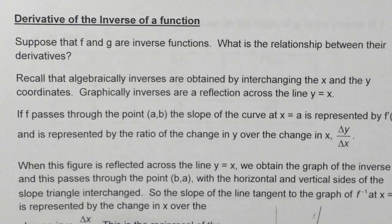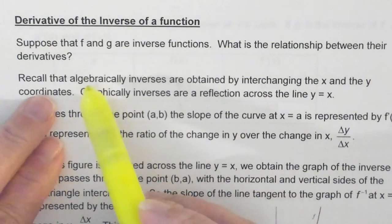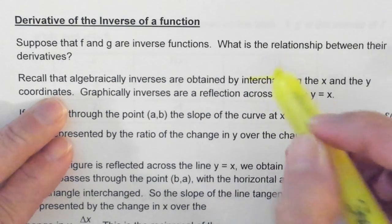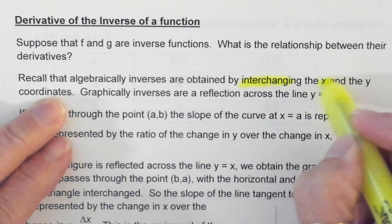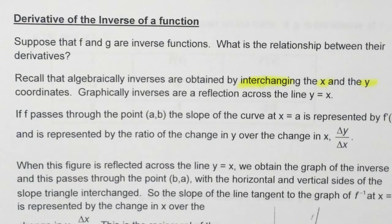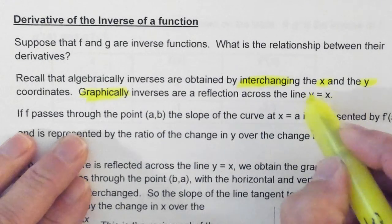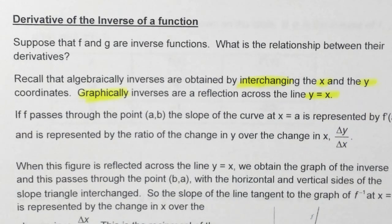Recall that algebraically inverses are obtained by interchanging the x and the y coordinates. Graphically, inverses are a reflection across the line y equals x. Basically, you can fold a piece of paper on the line y equals x, which is a line that goes through the origin with a slope of 1, and they would be mirror images.